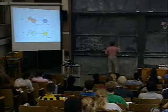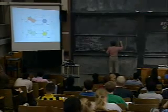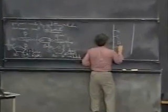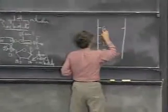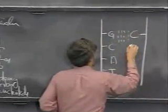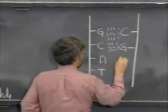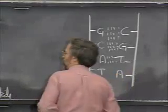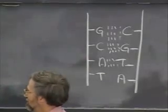DNA is the double helix — a backbone with sugars and phosphates and a sequence of bases down each strand. On the complementary strand, C pairs with G via three hydrogen bonds, and A pairs with T via two hydrogen bonds, and so on down the chain. We'll talk about the implications of this when we discuss DNA replication.